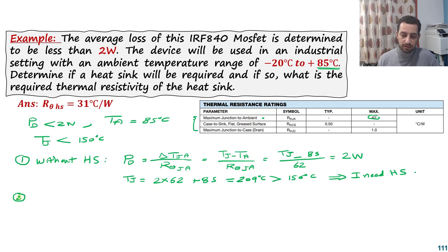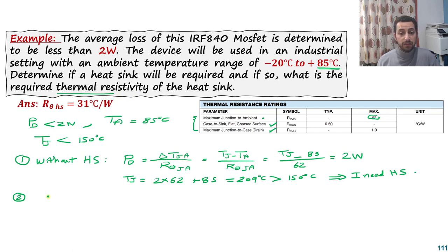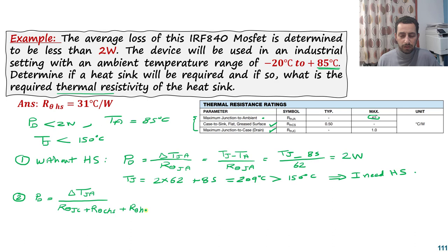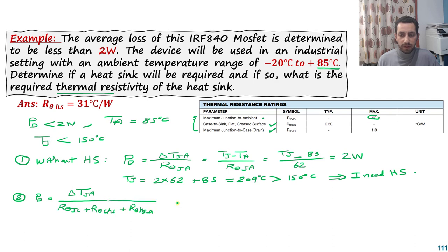Now let's consider a heat sink. With a heat sink, I need to account for the junction-to-case resistance, the case-to-heat-sink resistance, and the heat sink-to-ambient thermal resistance. The question asks for the required thermal resistance of the heat sink. Again, applying the thermal Ohm's law: power dissipation equals the temperature difference from junction to ambient divided by the total series resistance. The power dissipation is 2 watts.